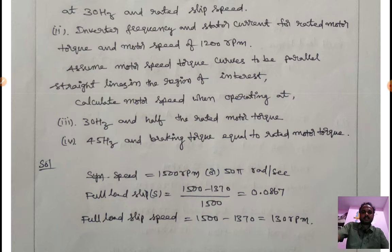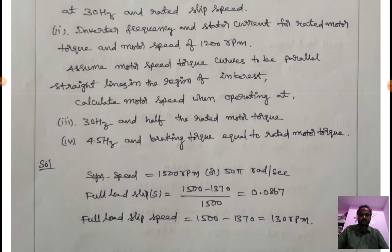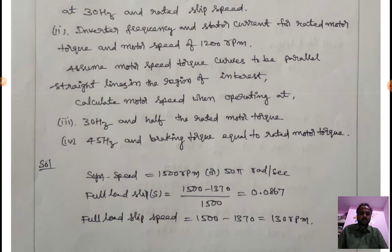Find the inverter frequency and stator current for rated motor torque at a motor speed of 1200 rpm, assuming the motor speed-torque curve to be parallel straight lines in the region of interest. Also calculate motor speed when operating at: third, 30 Hz and half of rated motor torque; and fourth, 45 Hz with braking torque equal to rated motor torque.